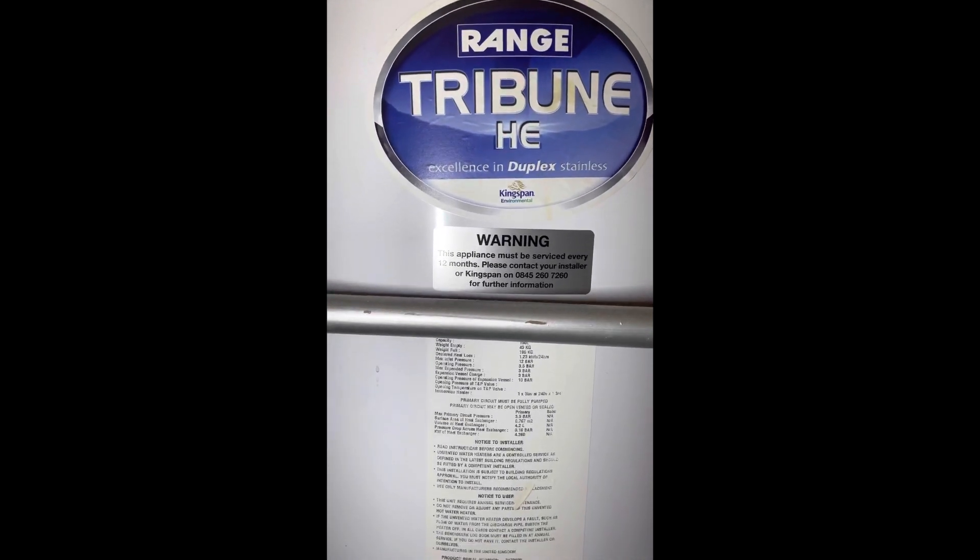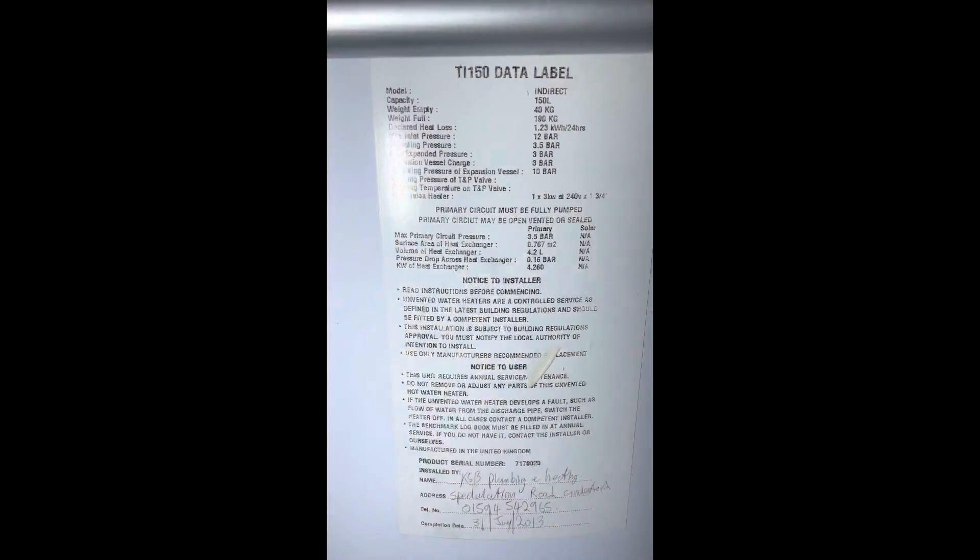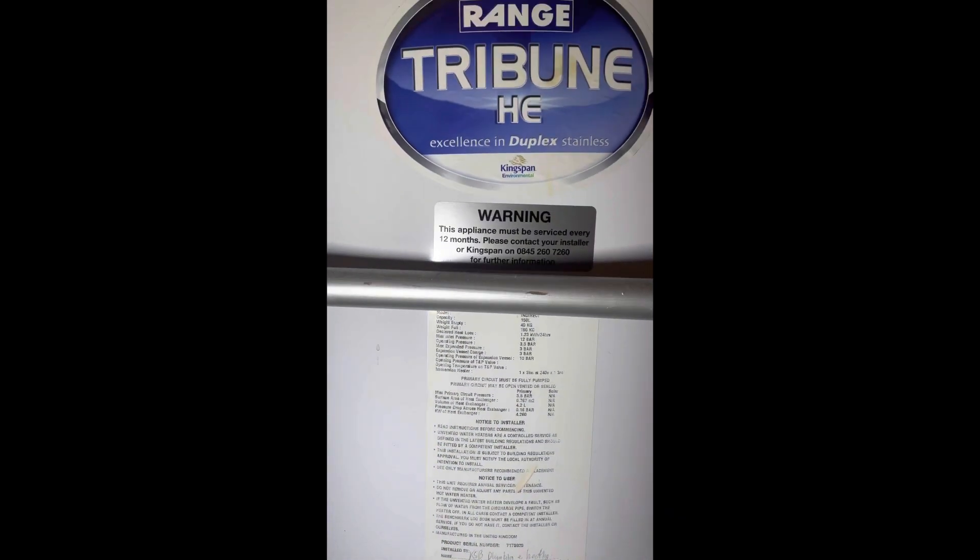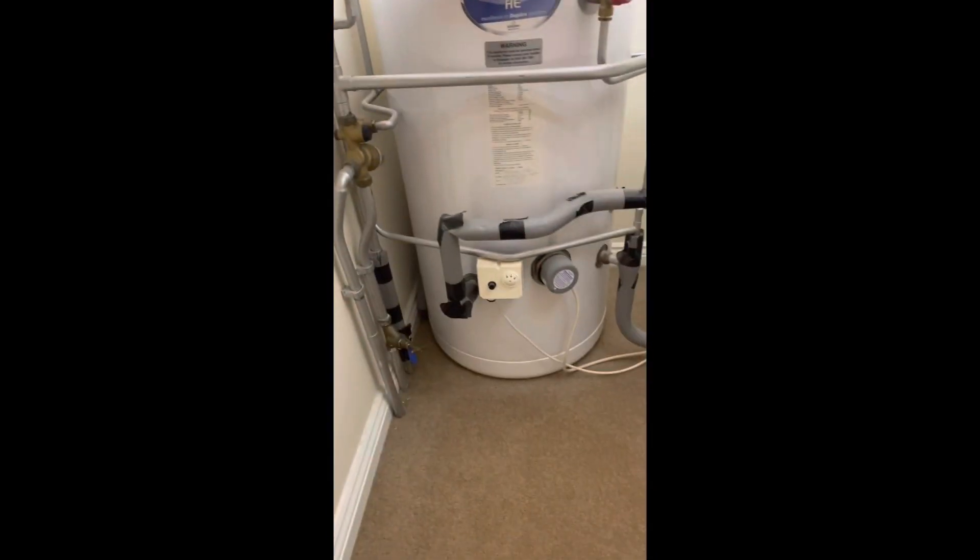Here's how to re-pressurize the expansion vessel on a Range Tribune vented cylinder. You may have to do this if you've noticed the tun dish is dripping.